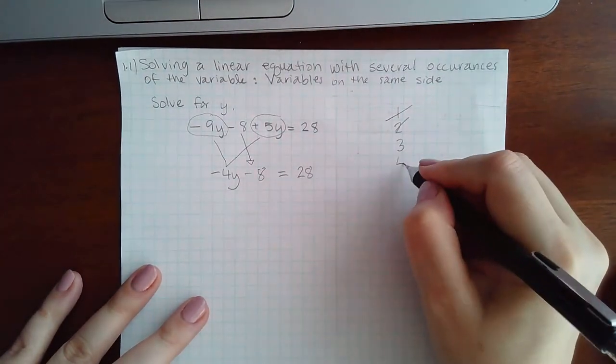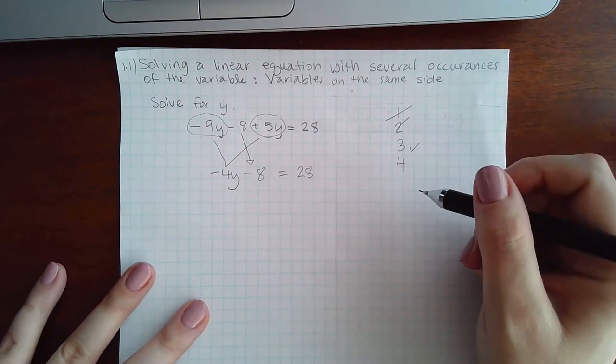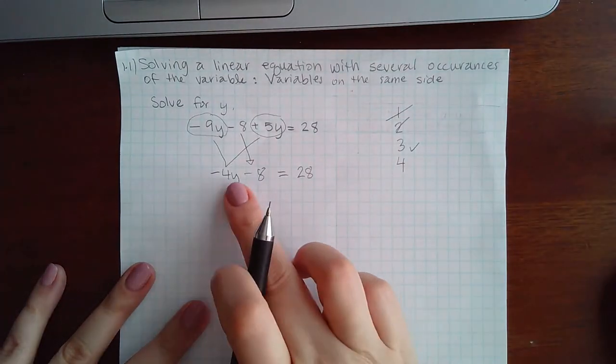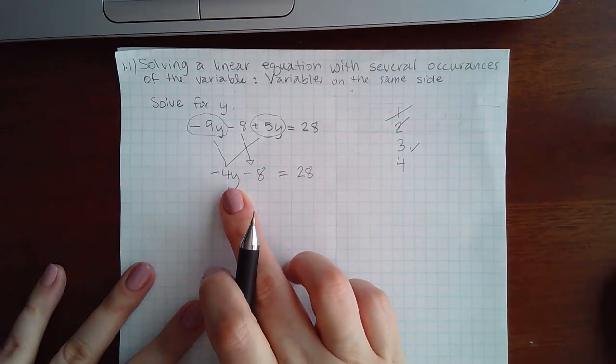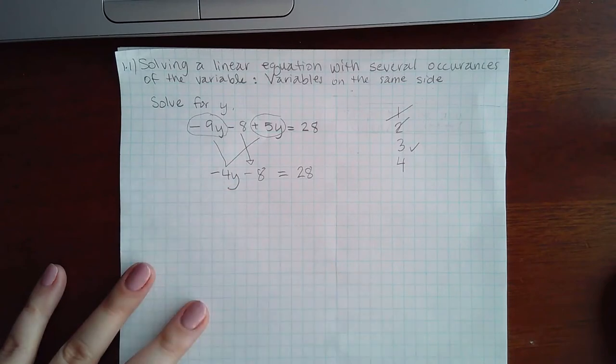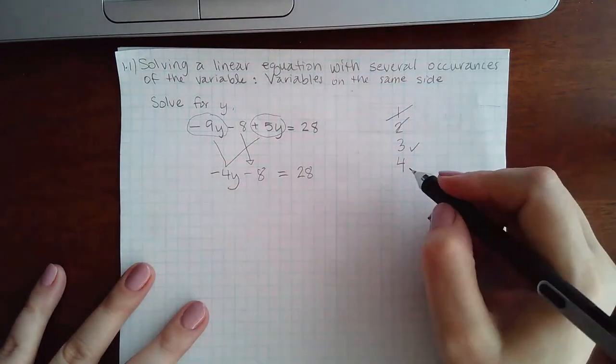Then step four is to move all the variables to one side. There's only one term with a variable in it, and it's already on a side, on the left side like we like it. So that's done.